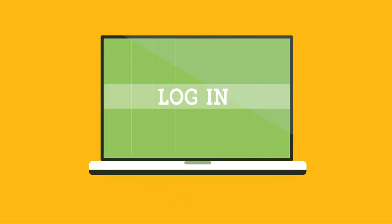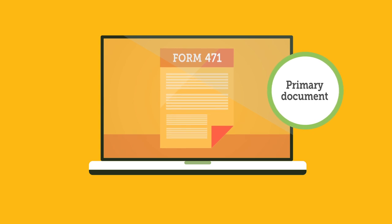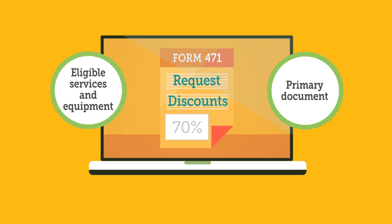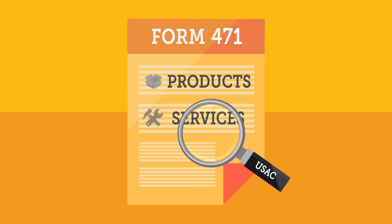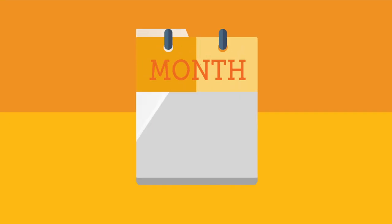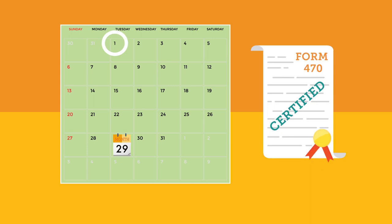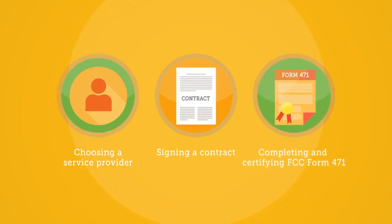The Form 471 is the primary document in the E-Rate application process, as it provides applicants the opportunity to request discounts on eligible services and equipment. It must contain detailed information about the products and services ordered so that USAC can verify eligibility. Remember, you must wait at least 28 days after your FCC Form 470 is certified before choosing a service provider, signing a contract, and completing and certifying an FCC Form 471.